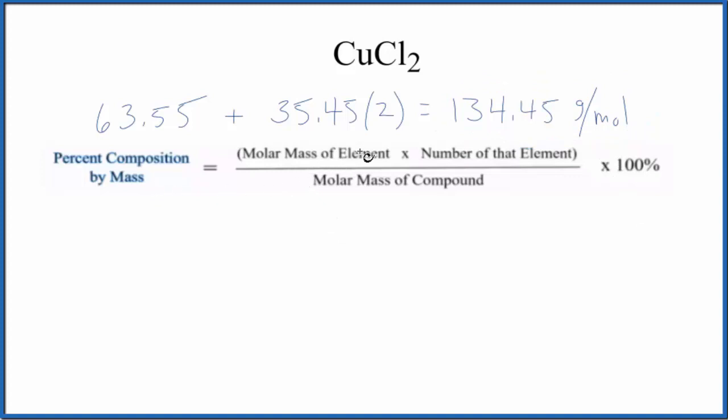Now we can figure out each element. We'll take the molar mass of the element times the number of that element, and then divide it by the molar mass we just figured out.